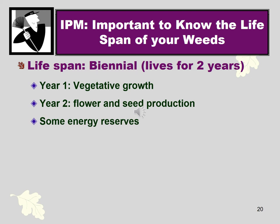Biennial weeds or plants live for only two years. The first year, like a dandelion, it's a very low-growing little rosette of leaves. Then the second year it produces the flowering stalk, reproduces, and sets seeds.